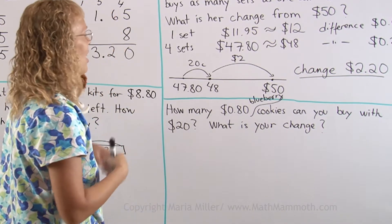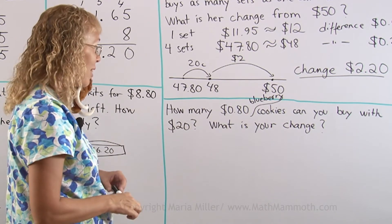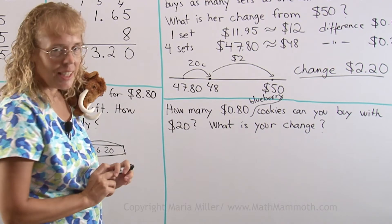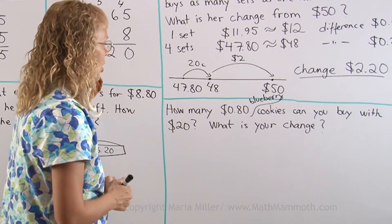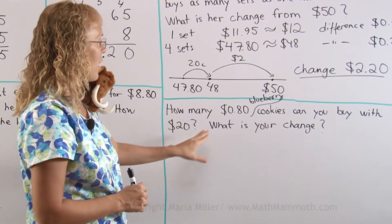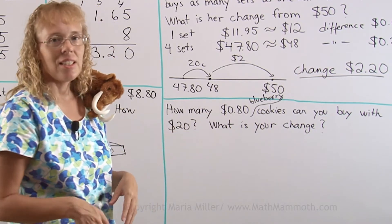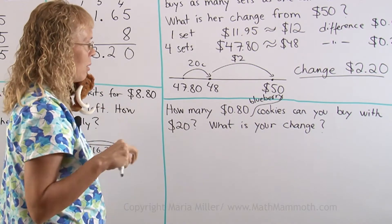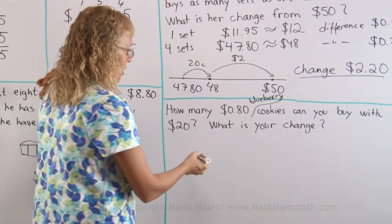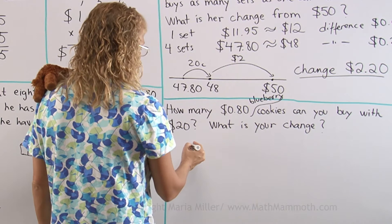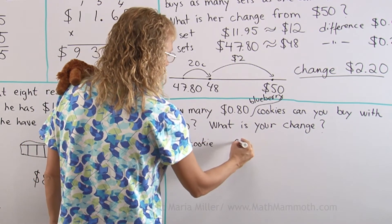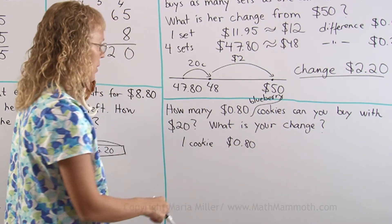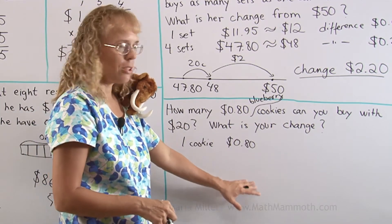Let's solve this. How many 80-cent blueberry cookies can you buy with $20.00, and what is your change? This would seem to be a division problem — you would solve $20.00 divided by $0.80. But that's decimal division and sounds difficult. There is an easier way. We can use guess and check. It's 80 cents, so let's see if we can multiply and work towards $20.00.